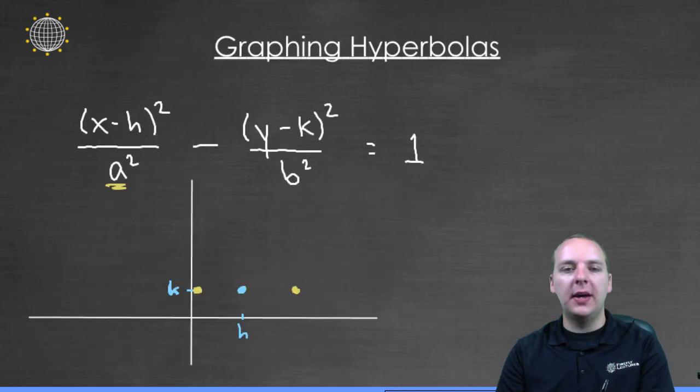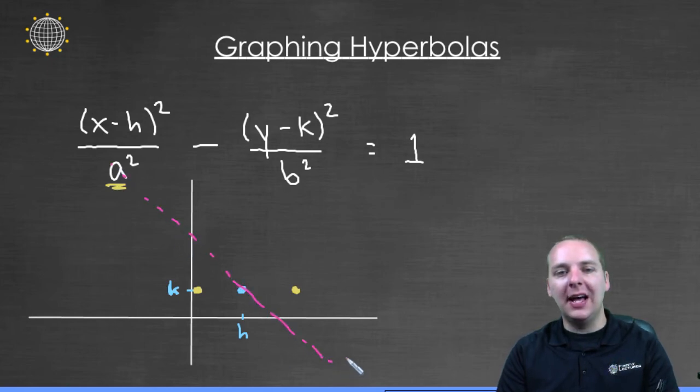Well what you're going to do to find these asymptotes, let me back up actually. What these asymptotes are, are these kind of slanted lines that your hyperbola is going to approach as it goes through the vertices.